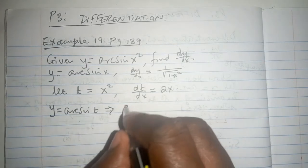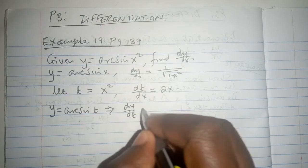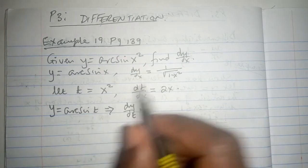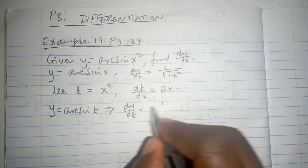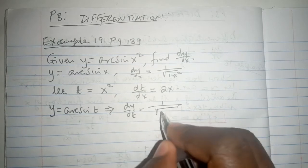We need now to talk about dy/dt, which is now in this format: 1 over the square root of 1 minus t squared.